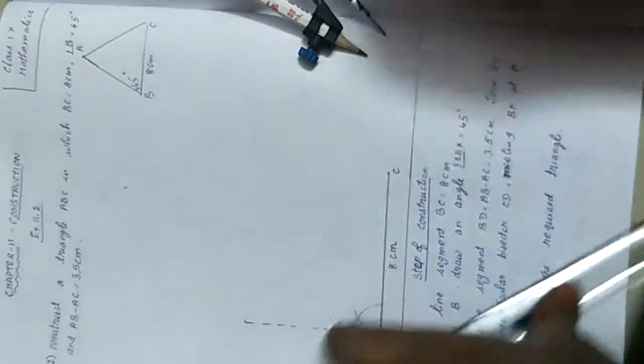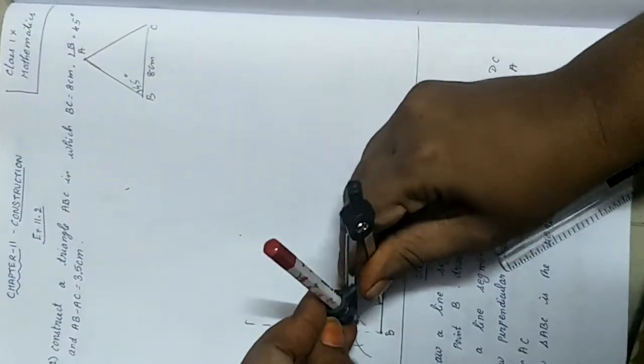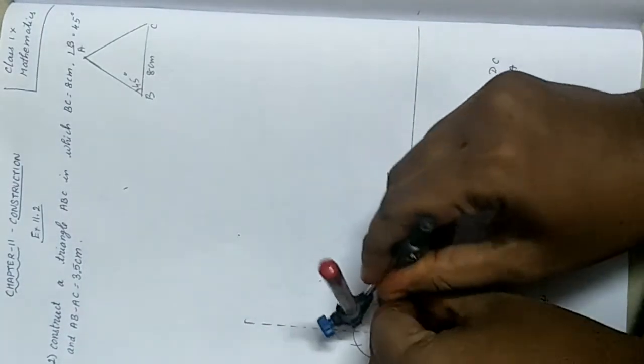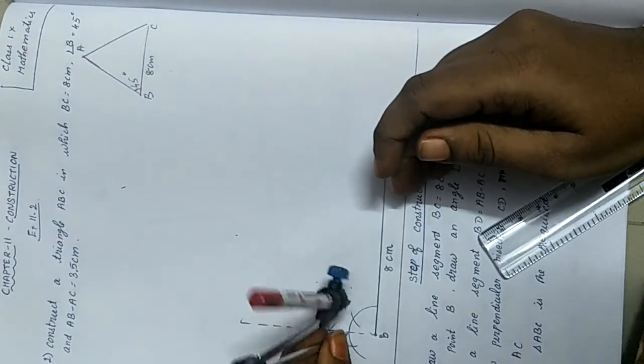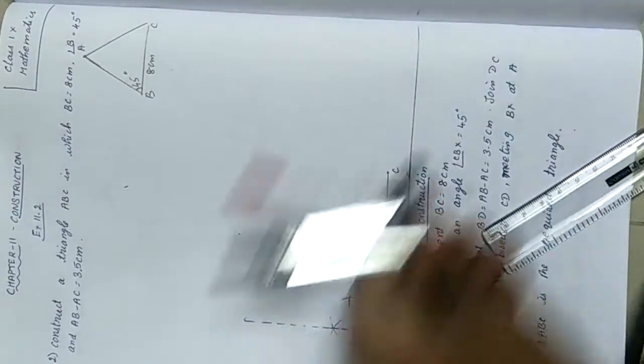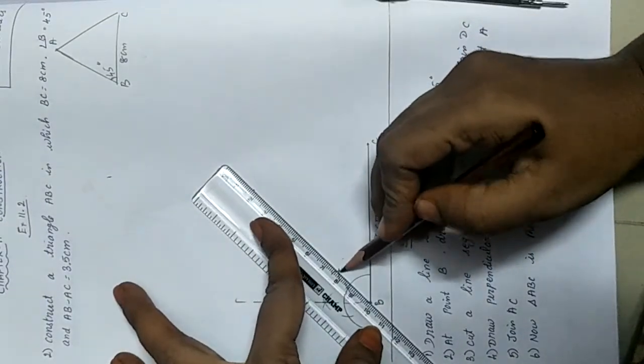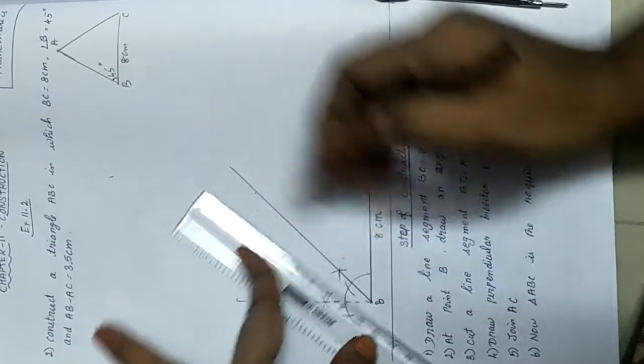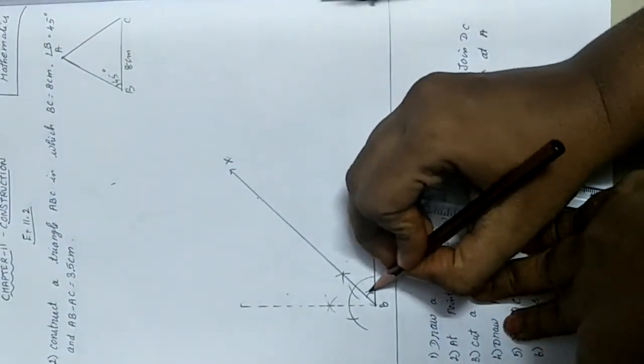We got 90 degrees over here, bisect this angle. Join this point and extend. Mark it as X, so we got 45 degrees here.